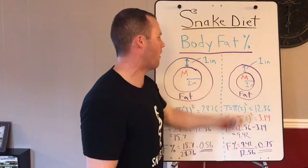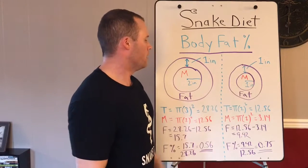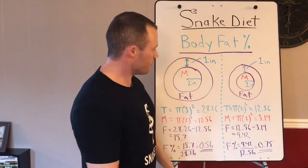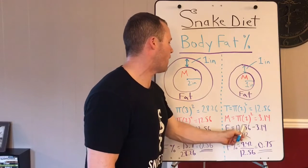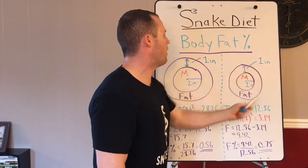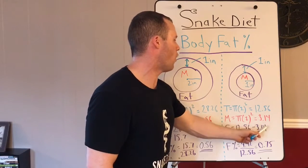Now the fat is going to be the big circle minus the inner circle. So 12.56 which is the whole area minus 3.14 which is the muscle in the middle equals 9.42 for fat.